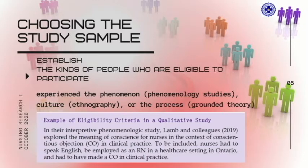How do you choose the study sample for qualitative research? Qualitative researchers need to establish the kinds of people who are eligible to participate in their research. It is important to determine that the participant has experienced the phenomenon if it's a phenomenology study, or experienced the culture if it's an ethnographic study, or experienced the process if it's a grounded theory research under investigation. Some practical issues when selecting the criteria include costs, accessibility, and health constraints, as well as current restrictions, health risks, and safety precautions required during the COVID-19 pandemic. Here is a sample of eligibility criteria in a qualitative study.